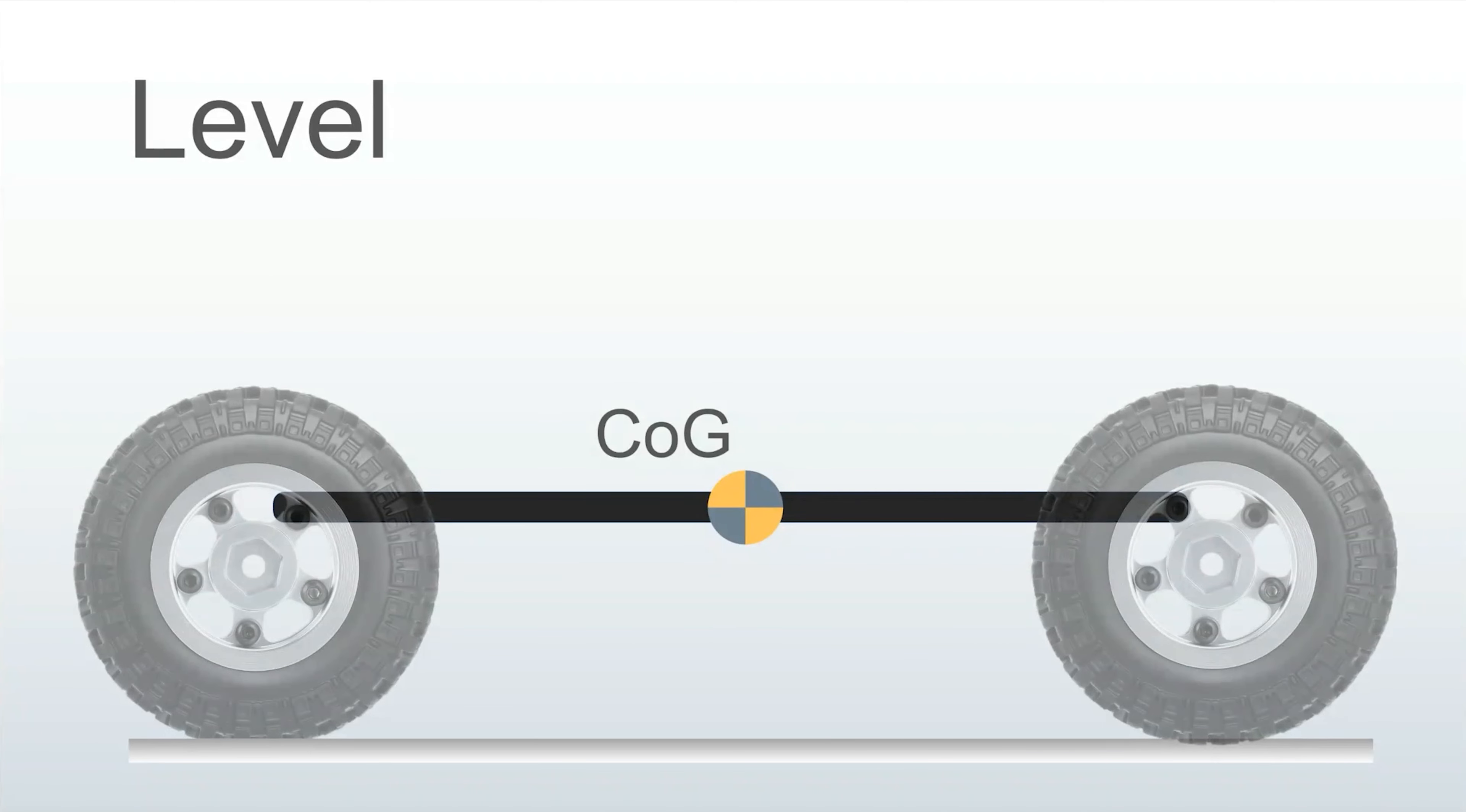Whenever you change the position of weight or add weight, you are shifting your CG or center of gravity. You might be trying to decide where to mount your receiver or battery, or you might be contemplating adding brass or tungsten weights. One thing to know about the center of gravity is that it doesn't change when the angle of your vehicle changes.